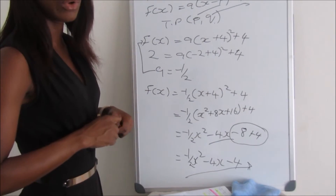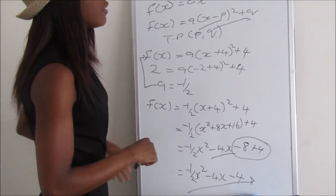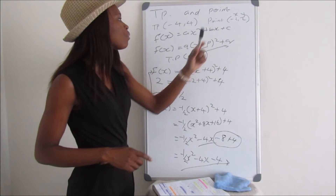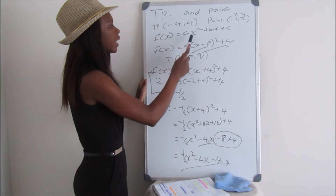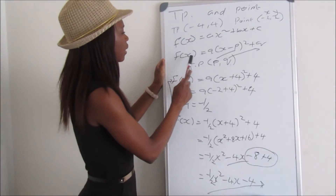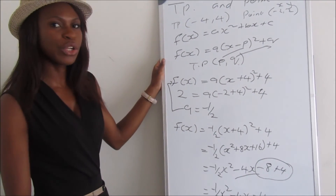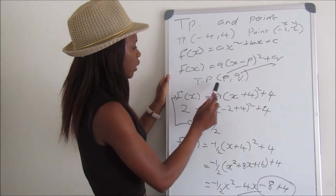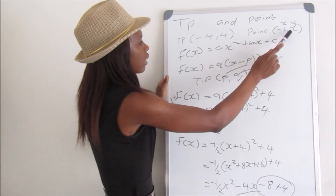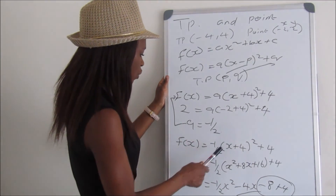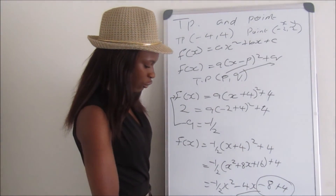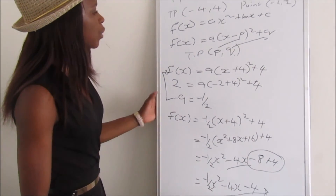Quick recap: we found the equation of a parabola with turning point (-4, 4) and another point (-2, 2). Using the vertex form f(x) = a(x - p)² + q, we substituted the turning point, then used the second point to find a = -1/2. Substituting and expanding gives the final answer: f(x) = -1/2x² - 4x - 4.